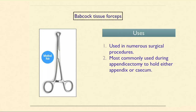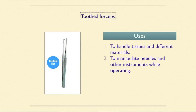Babcock tissue forceps are used in numerous surgical procedures, most commonly during appendectomy to hold either the appendix or cecum. Toothed forceps are used to handle tissues and different materials and to manipulate needles and other instruments while operating.